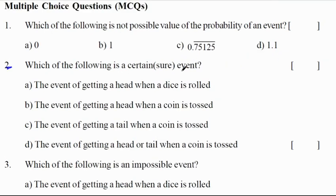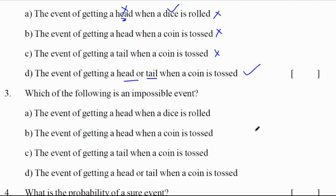Second question, which of the following is a certain or sure event? Getting a head when dice is thrown. When we throw dice, we will get 1, 2, 3, 4, 5, 6 numbers, not a head. So this is wrong option. The event of getting a head when a coin is tossed, you may get tails also. Getting a tail when a coin is tossed, we may get head also. Getting a head or tail. This is a compulsory event, certain event or sure event. Correct option is D.